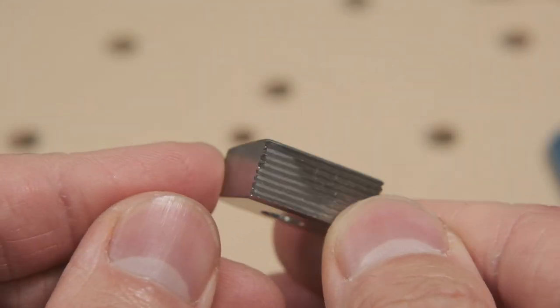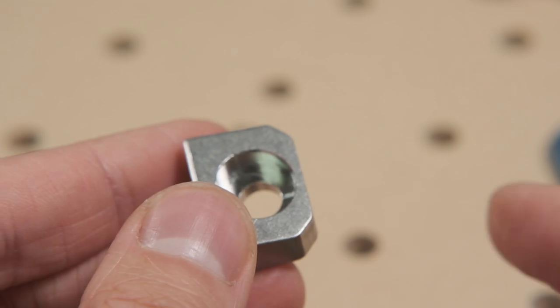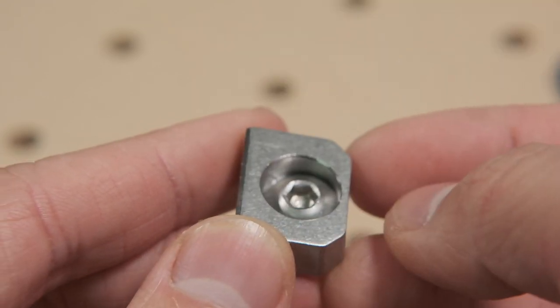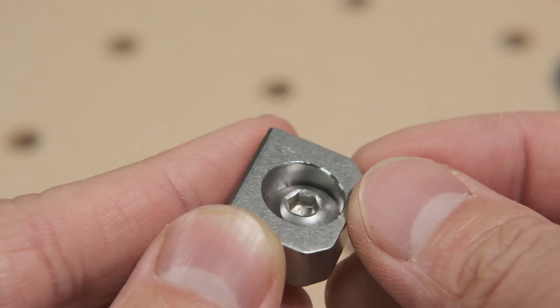These stainless steel blocks bolt to your machine using M6 or quarter-twenty hardware like our other workholding accessories and provide a fixed edge against which you can push your stock.